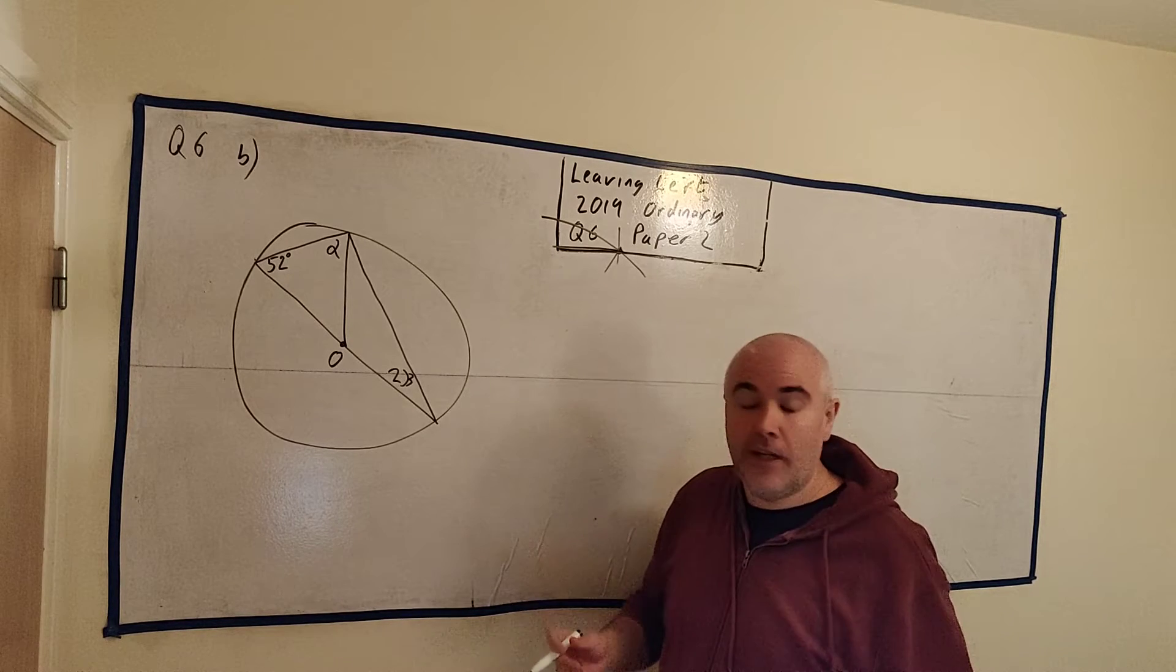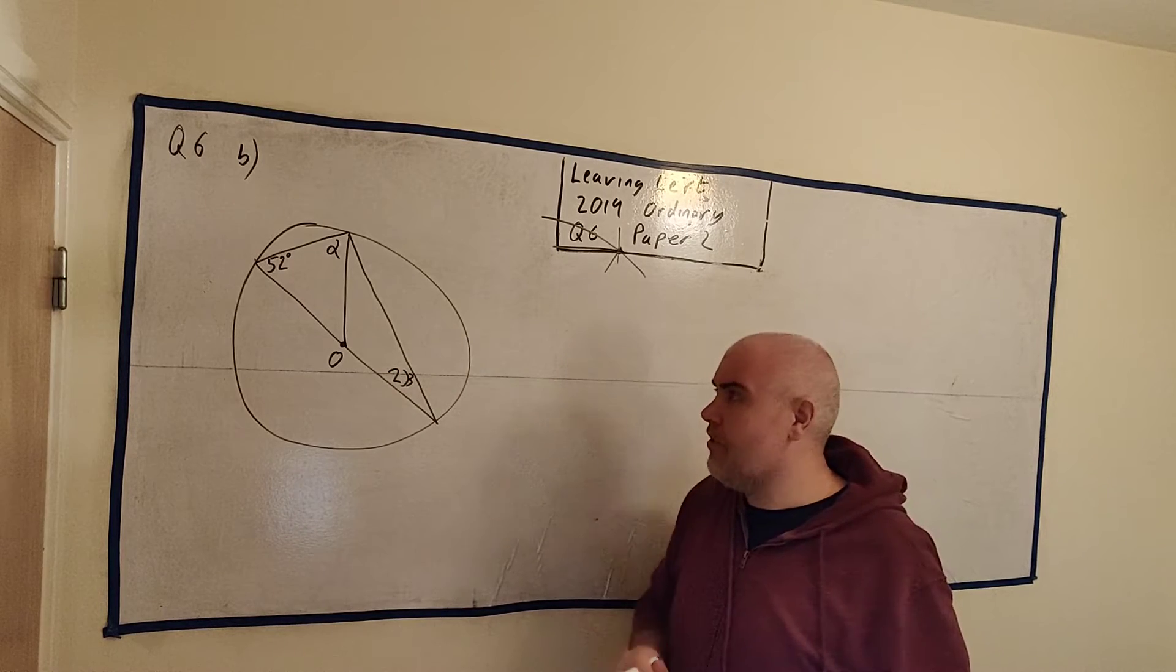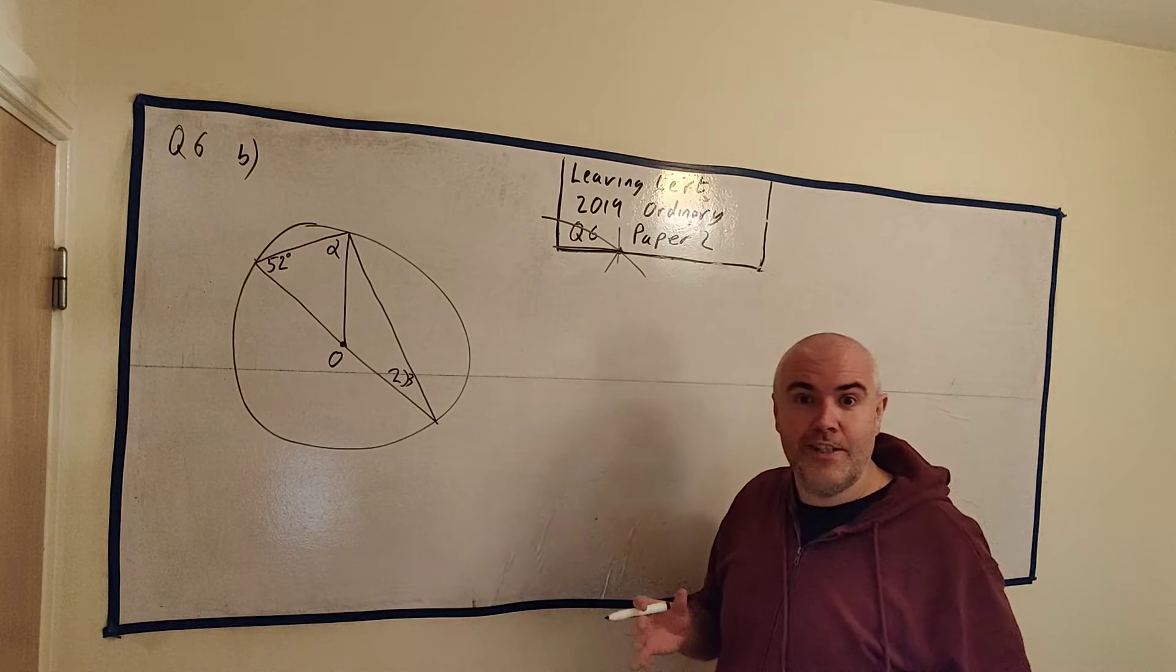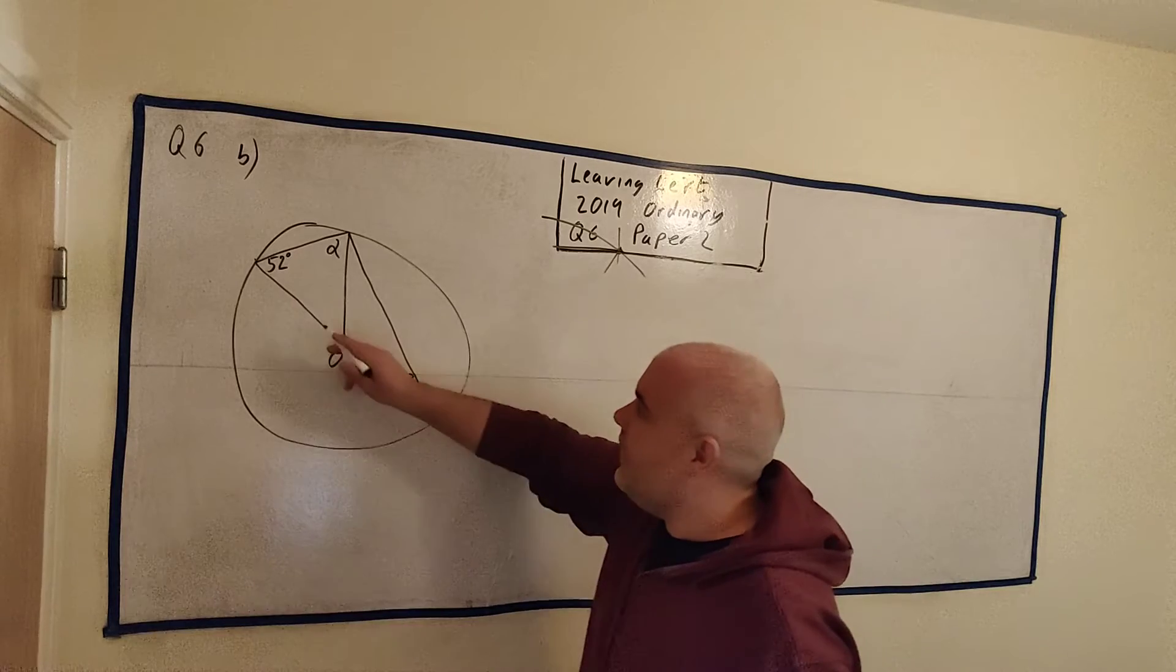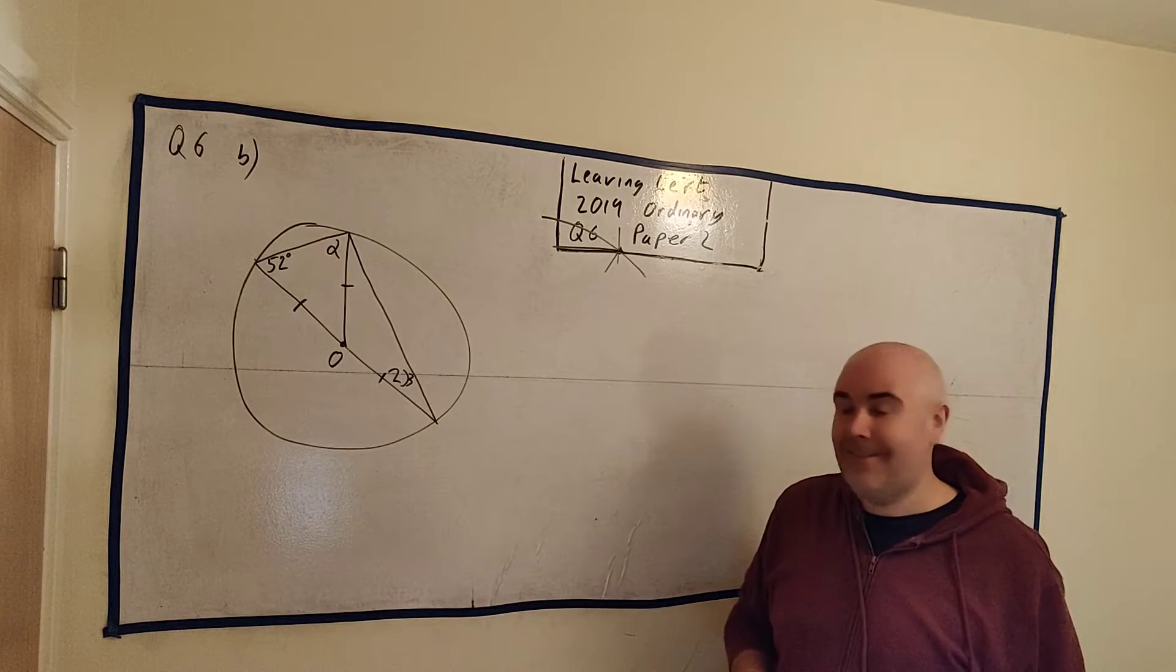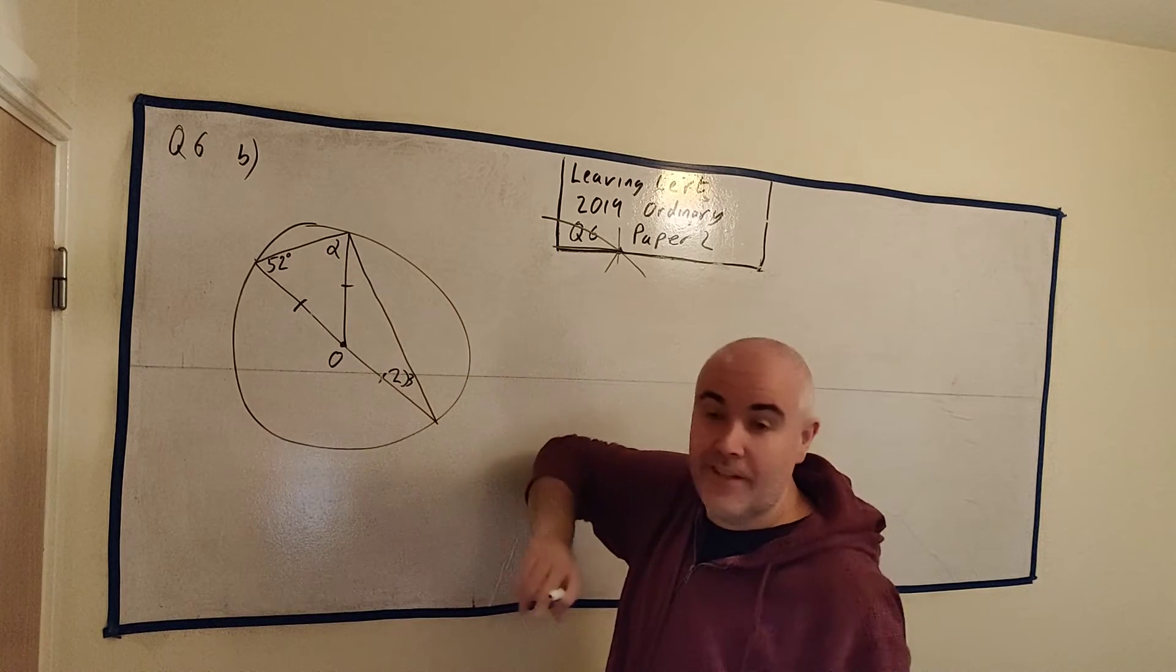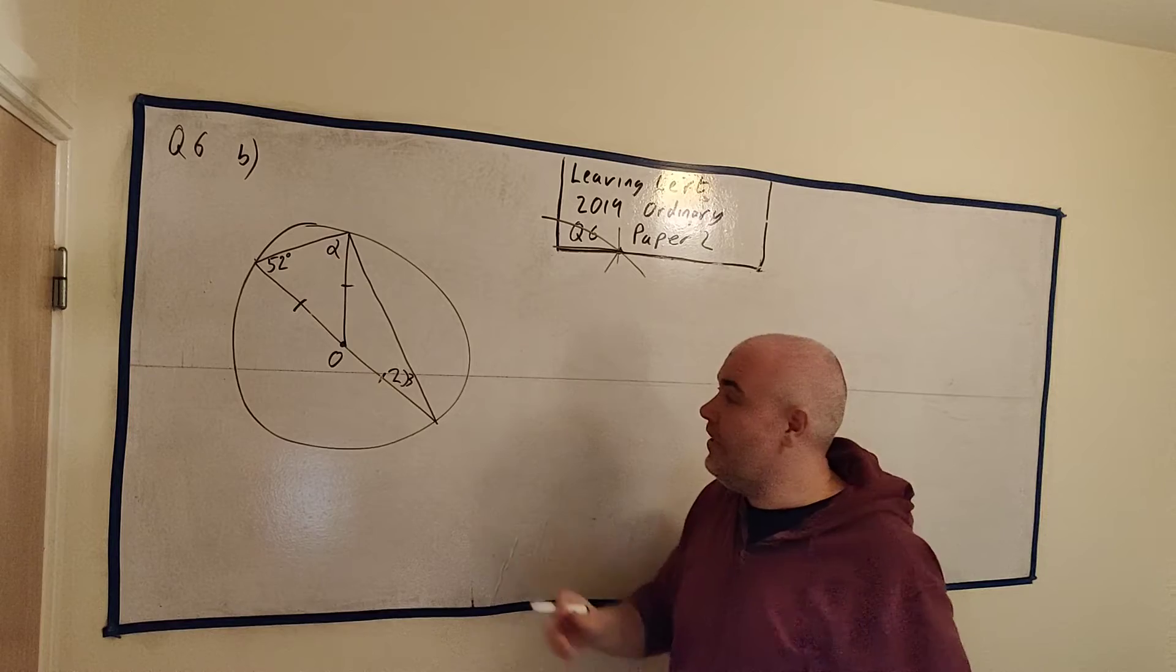I'd like to point out what bits of information, because this is how we're going to solve this question. You need to be able to find the hidden bits of information in here. One thing you should always notice in these questions is the radius. Always be keeping an eye out for the radius. Here is a radius, here is a radius, and here is a radius. That means all those lengths are the same length. That means these two triangles are isosceles triangles.